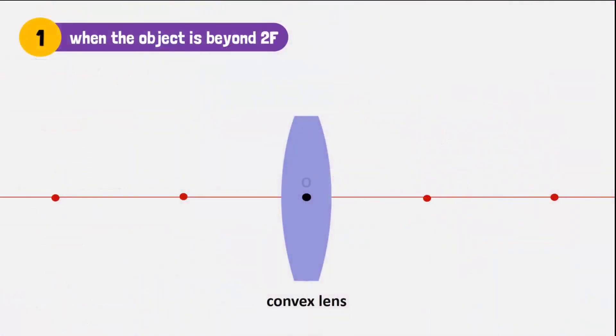Let's use a candle as an object and change its distance from the lens to see how these rules work. Remember, O is the optical center, F is the focal point, and 2F is twice the focal length.